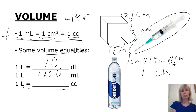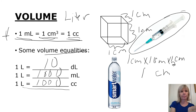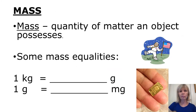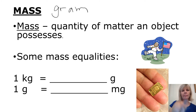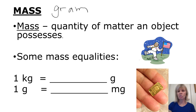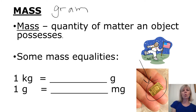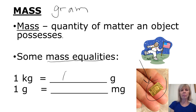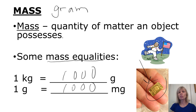The basic metric unit for mass is the gram — about the size of a paperclip. This shows you one gram of gold, so you can see how small that is. For mass equalities: one kilogram equals 1,000 grams, and one gram contains 1,000 milligrams. Remember those prefixes. Mass means the quantity of matter an object possesses — for example, looking at this astronaut, it's the amount of him that's there.